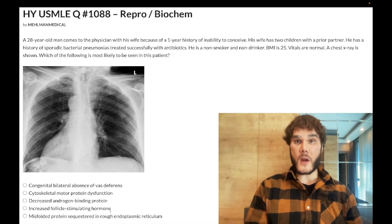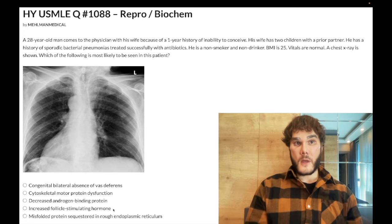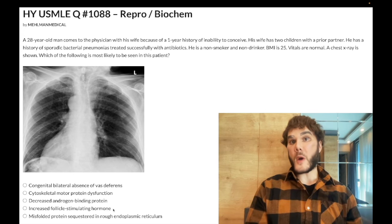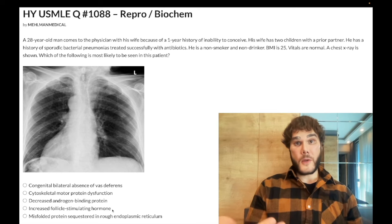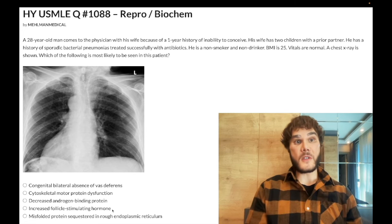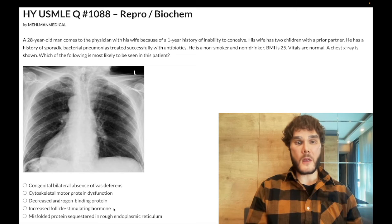Answer choice D — increased FSH — wrong answer. This is paired with choice C. In primary hypogonadism, you'd have decreased androgens and decreased inhibin, leading to decreased negative feedback at the hypothalamus and anterior pituitary. GnRH goes up, and LH and FSH both go up. Clinically, high FSH is a key diagnostic tool for primary hypogonadism — seen in Turner syndrome, Klinefelter, and physiologically in menopause. Wrong answer here.